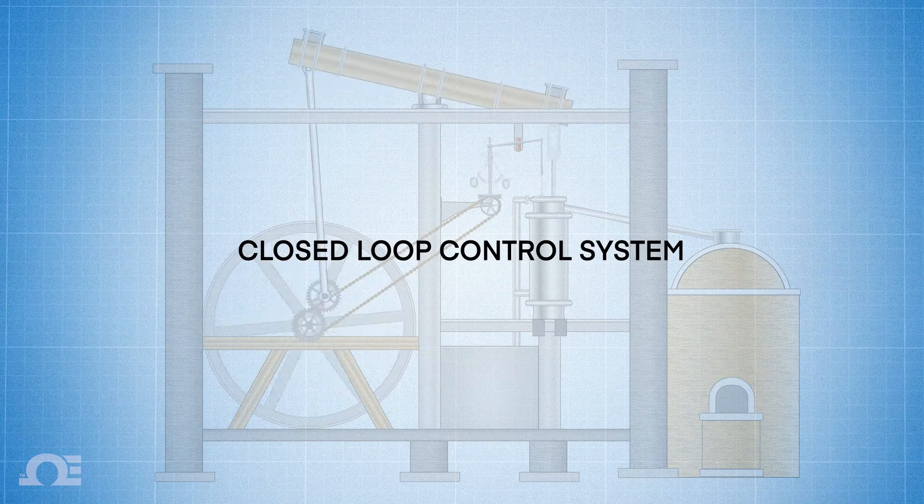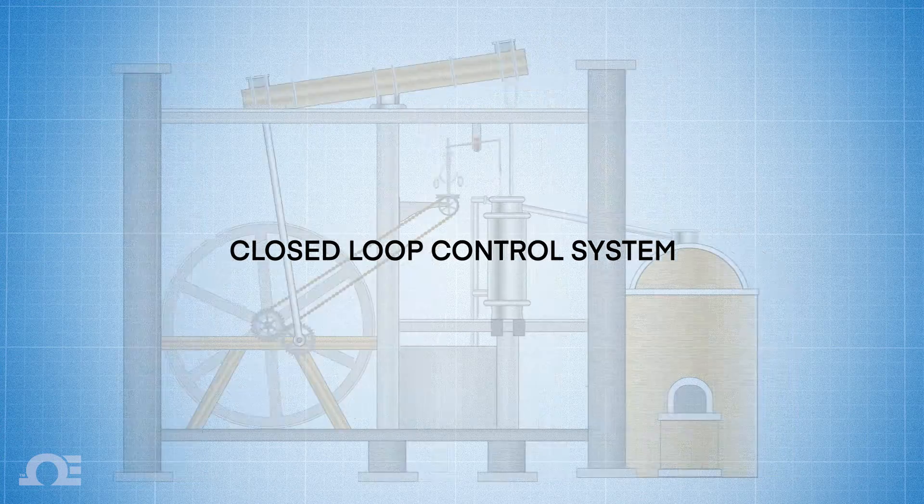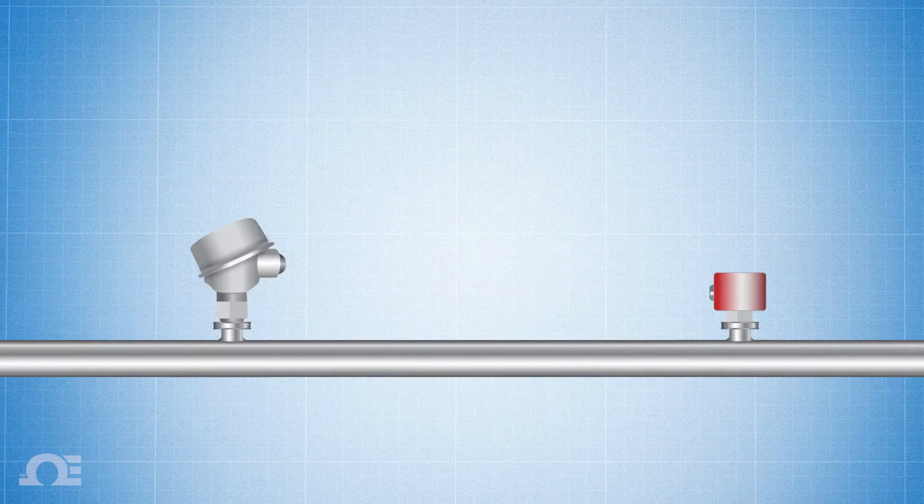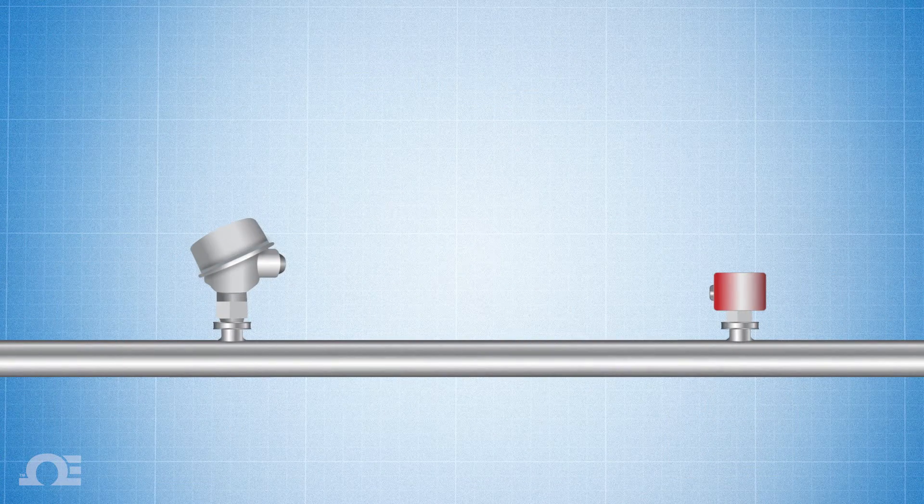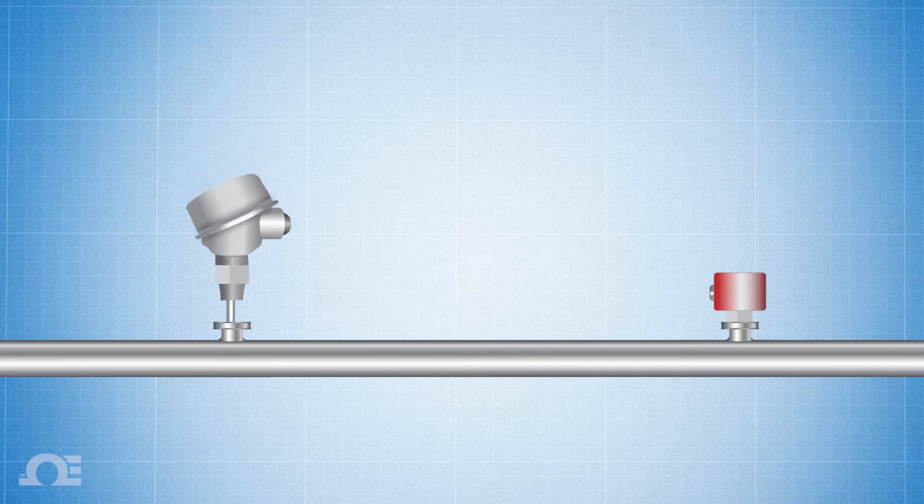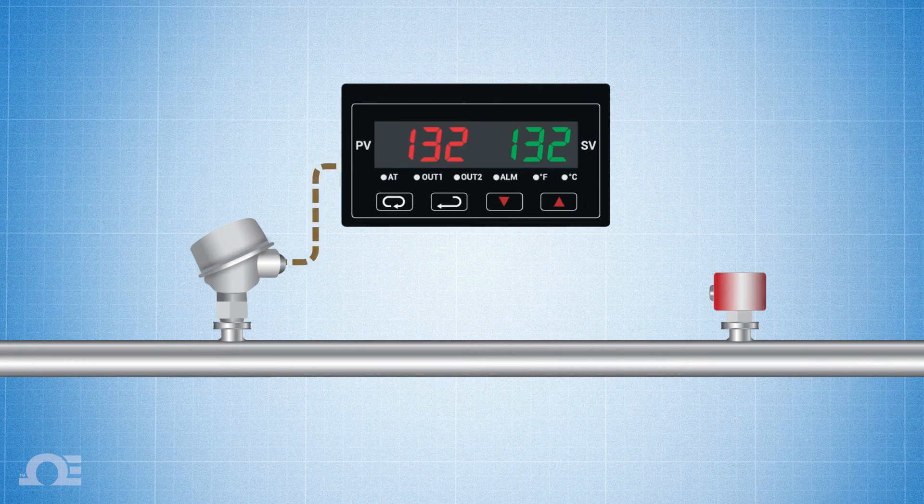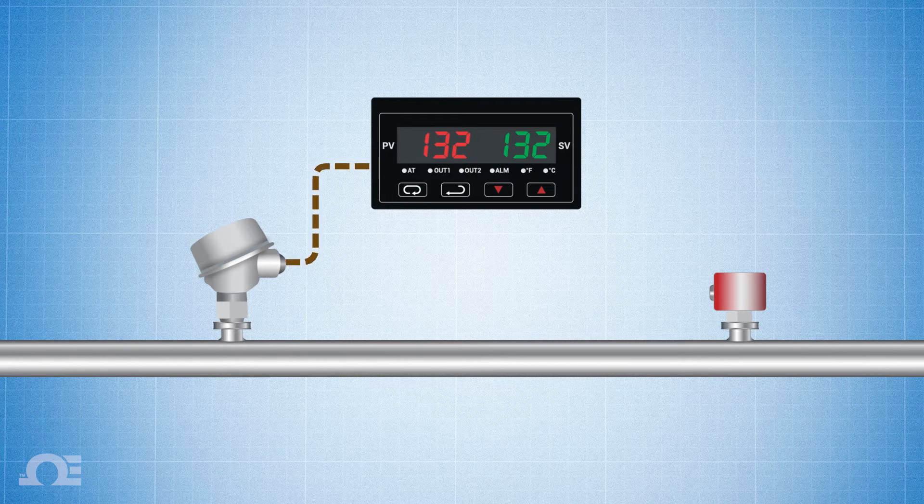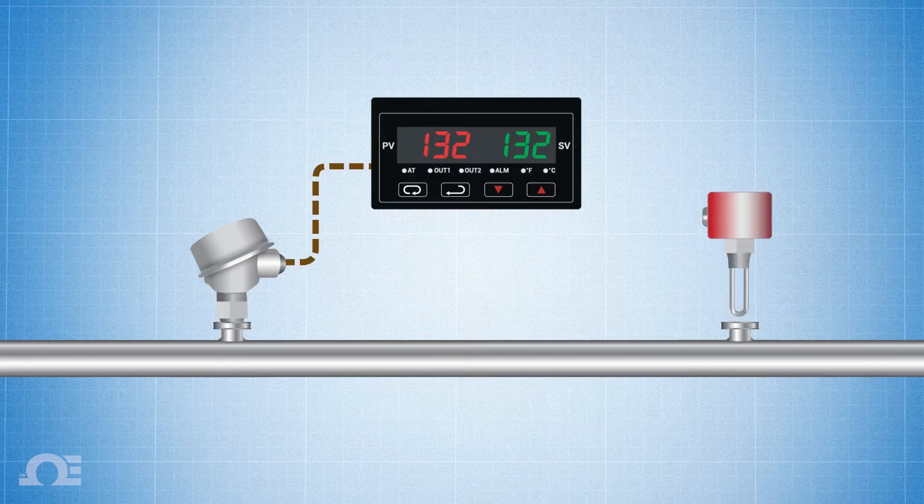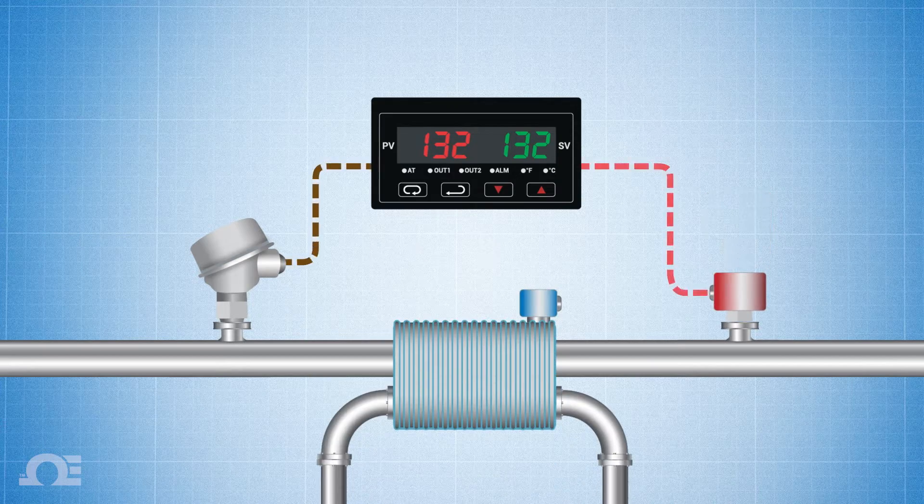For example, when we want to control the temperature of media in a process, we'd use a sensor to measure the temperature, a controller to gauge the level of error between the sensor reading and the controller's set point, then the controller engages an actuator, in this case a heater, to bring the temperature up, or a heat exchange to bring it down.